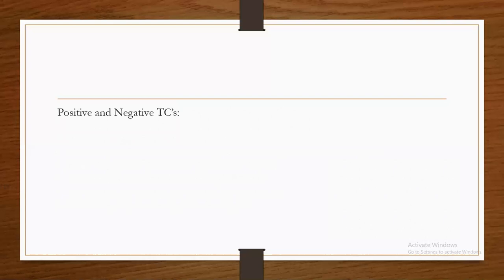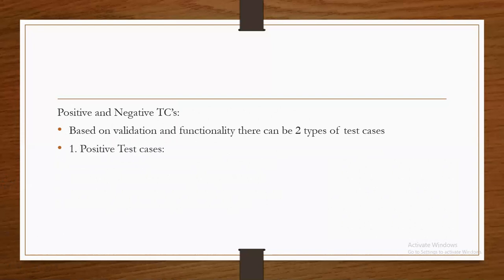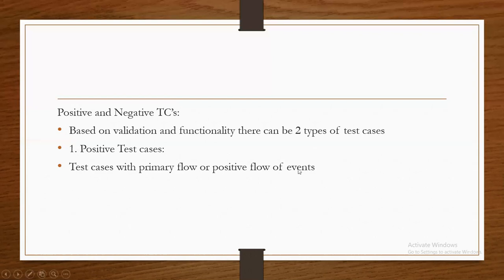Then, positive and negative test cases. What is the meaning of positive and negative test cases? Based on validation and functionality, there can be two types of test cases. Positive test cases are test cases with the primary or positive flow of events — those we are going to call positive test cases. They may ask in an interview: what is a positive test case? Test with primary flow or positive flow of events. That means, if I want to write a test case to see if a successful login transaction happens or not, and the output expectation is a successful transaction — that comes under positive test cases. Example: test case with valid inputs.